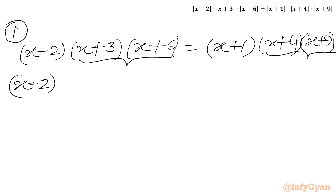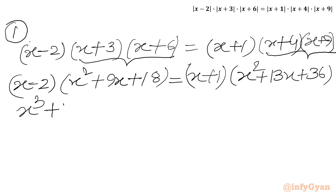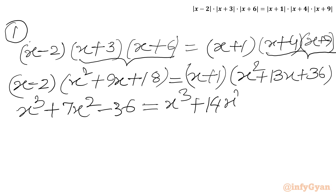So I can write (x minus 2) times (x² + 9x + 18) equal to (x plus 1) times (x² + 13x + 36). Expanding the LHS: x³ + 9x² - 2x² - 18x + 18x - 36, which gives x³ + 7x² + 0x - 36. Expanding the RHS: x³ + 13x² + 36x + x² + 13x + 36, which gives x³ + 14x² + 49x + 36.